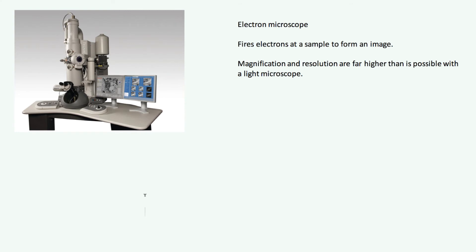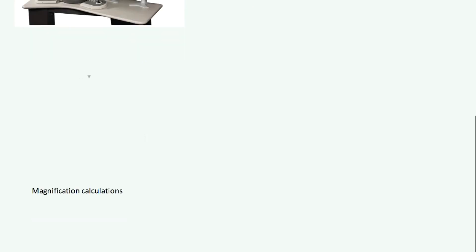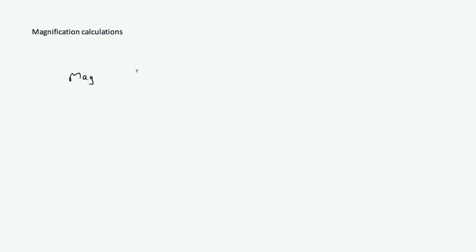Now let's have a look at some calculations you may be asked to do in an exam — working out magnification. There is a formula you need to know and remember: magnification equals image size divided by real size. Magnification is how far you've zoomed in. Image size is the size of the image you're looking at. Real size is the real-life size of what you're looking at.